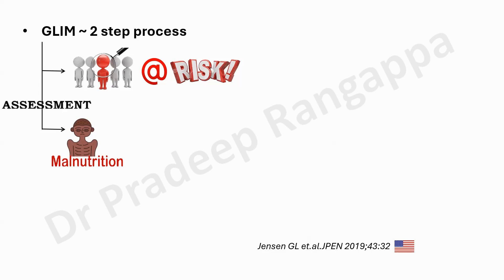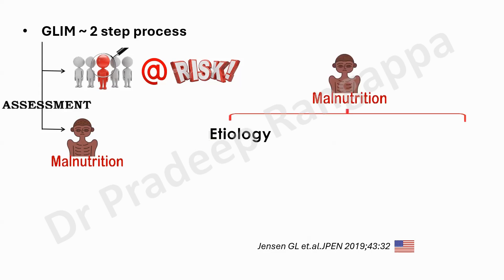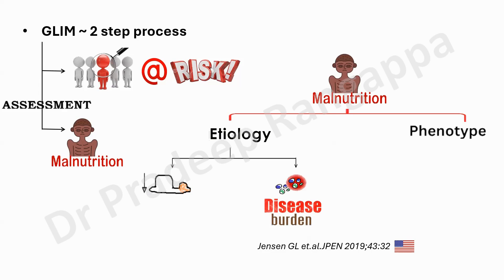The essence of GLIM is that it has two broad categories: etiological criteria and phenotypic criteria. In the etiological tool, they look at whether nutritional intake has been diminished for whatever reason, and whether there is an underlying disease burden — it could be cancer, critical illness, any chronic disease, or chronic inflammation. Etiological criteria cover decreased nutritional intake and whether there is an underlying chronic or acute inflammatory disease, such as sepsis, oncology, post-operative, or immunological conditions.